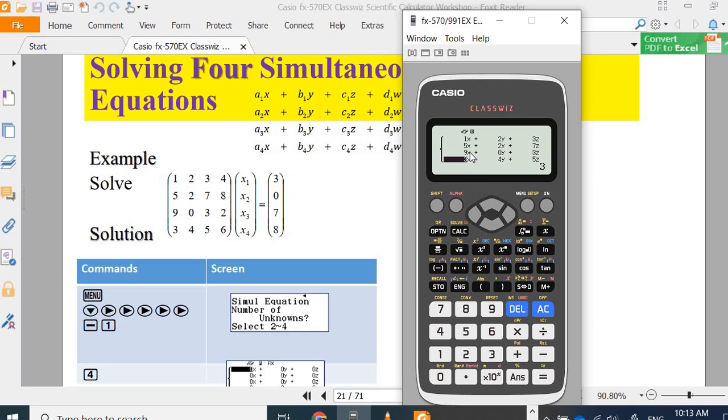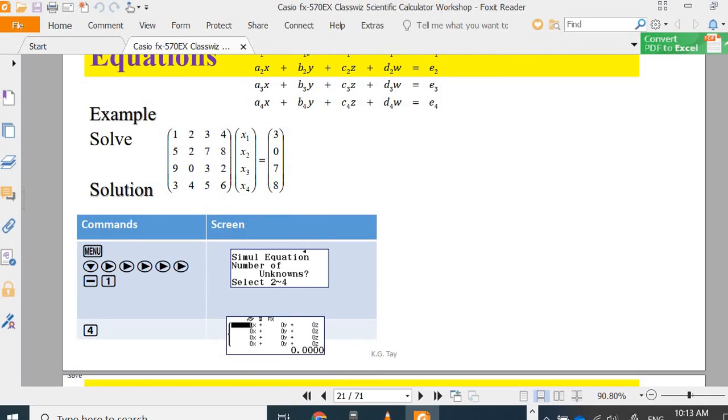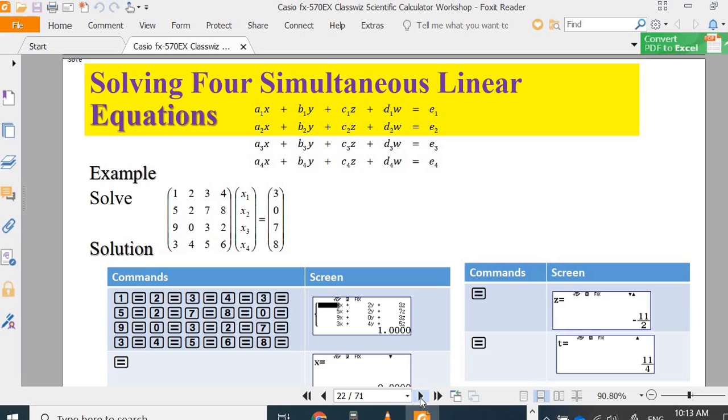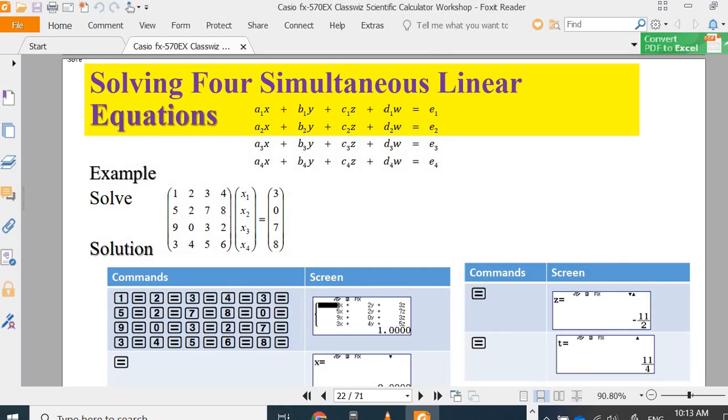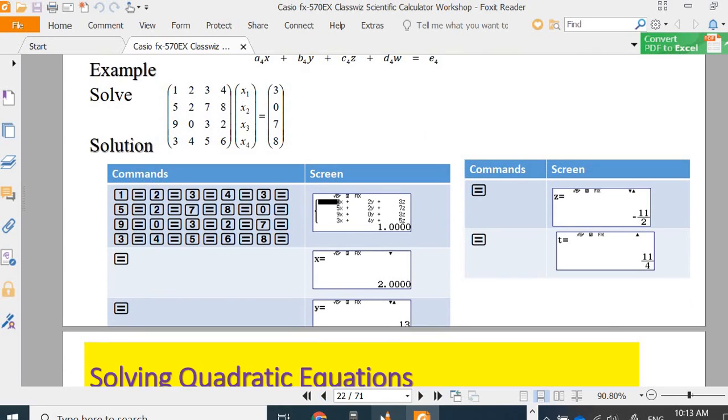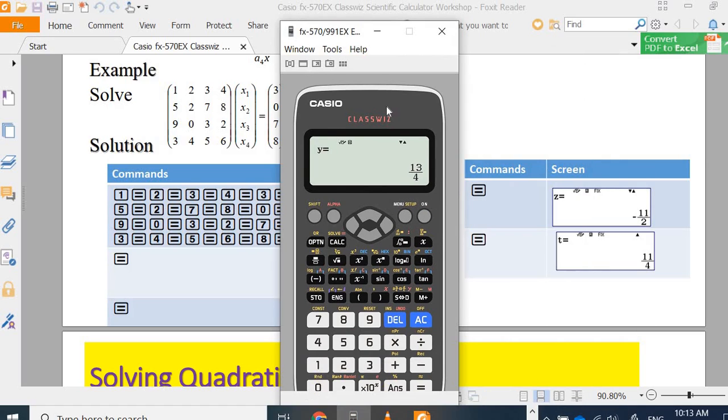x is our x1, 1, 5, 9, 3. So if you see everything correct, and press the x2. y is 13 over 4, z is x3, t is x4.